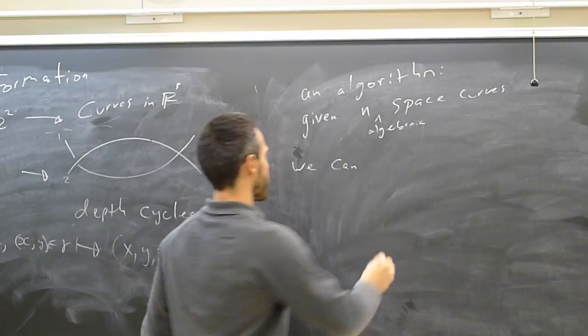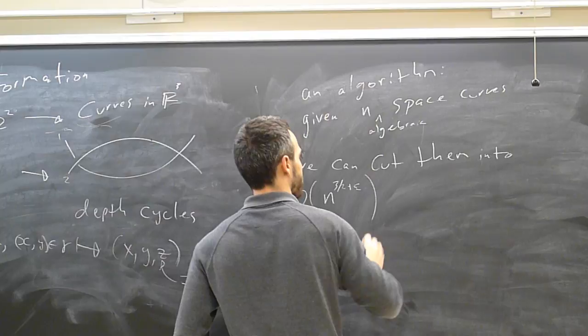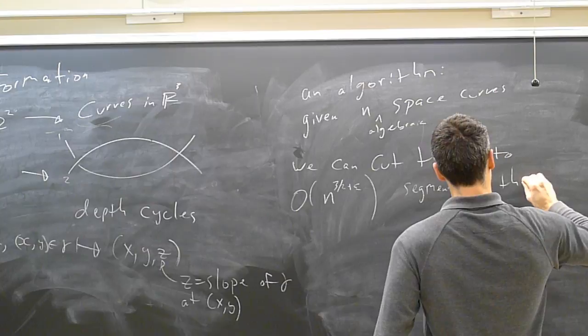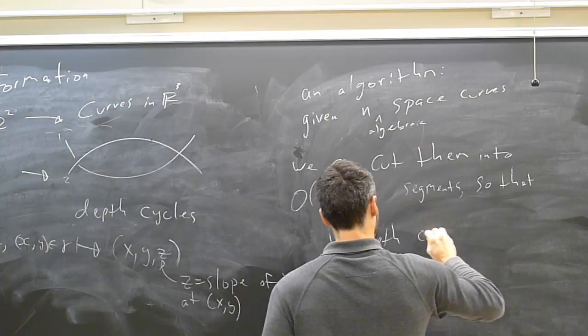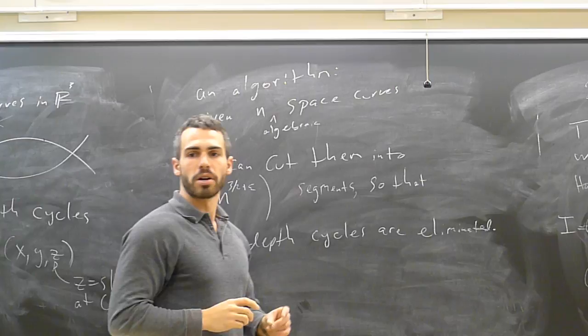So let's finish the sentence. We have an algorithm. Given n algebraic space curves, we can cut them into, well, exactly the number you expect. O of n to the 3/2 plus epsilon pieces, segments, so that there's no depth cycles.